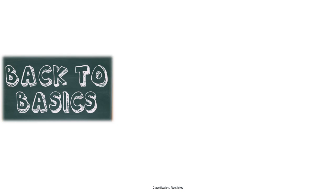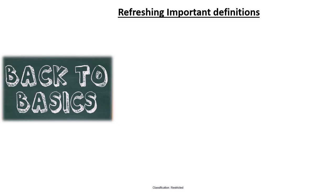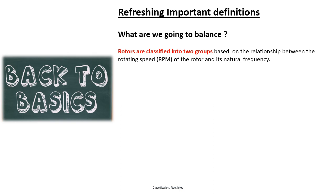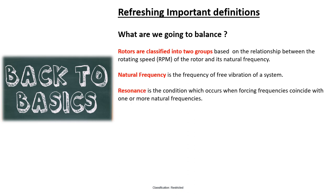Before going to the topic, let's refresh some important definitions. We are going to balance rotors, which are classified into two groups based on rotating speed and natural frequency. Natural frequency is the frequency of free vibration of a system — all machines and machine components have a number of natural frequencies. Resonance is the condition which occurs when the forcing frequencies coincide with one or more natural frequencies, which amplifies vibration.